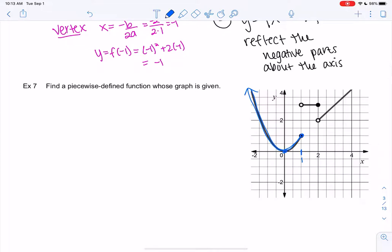It goes through 0, 0. It goes through 1, 1. So the blue piece would be y equals x-squared. And it looks like it's only true when x is less than or equal to 1.